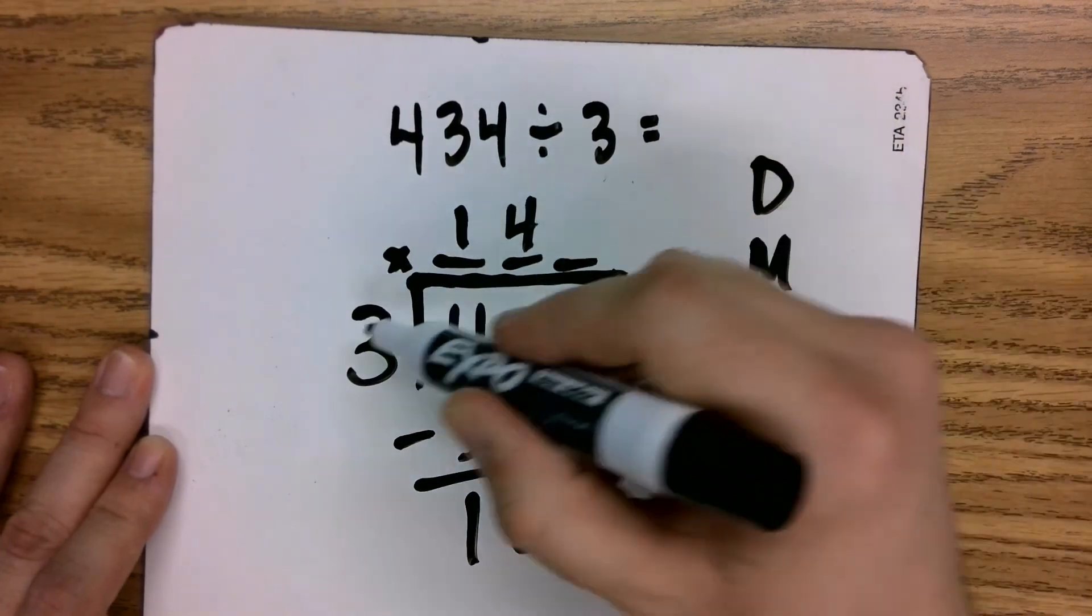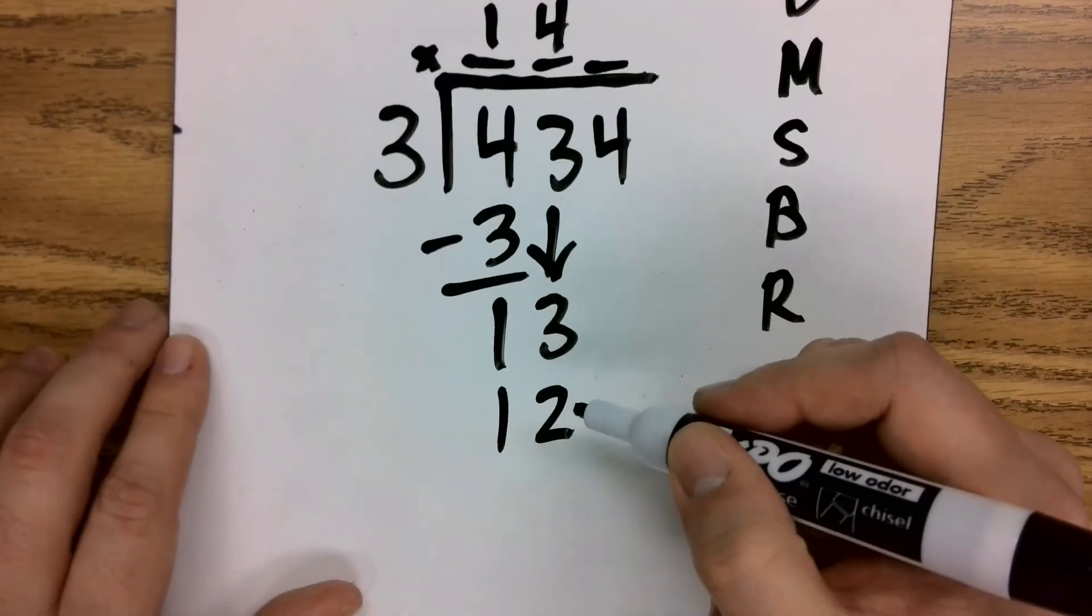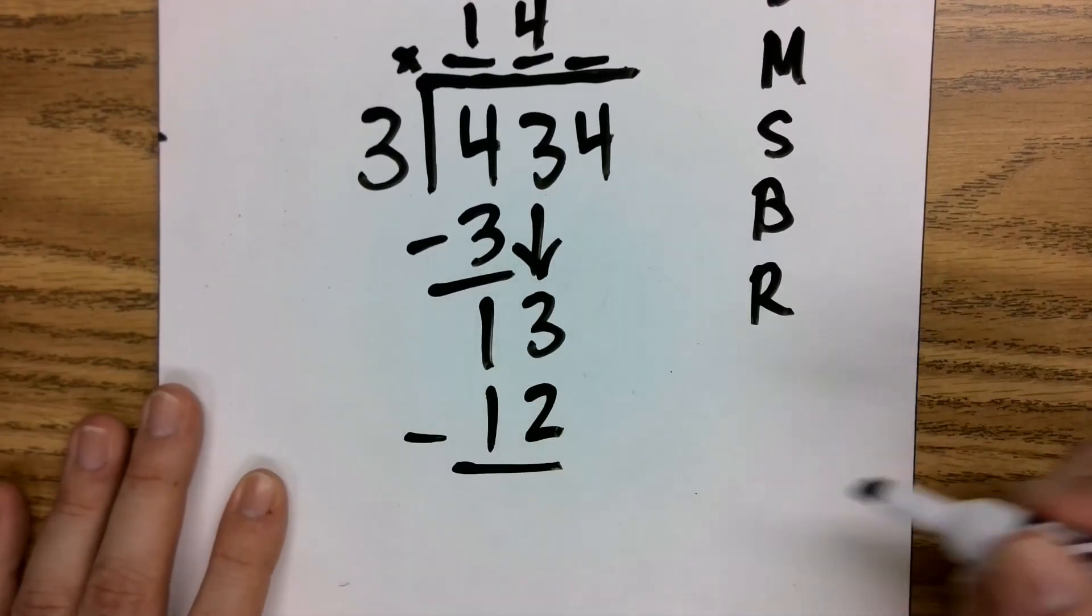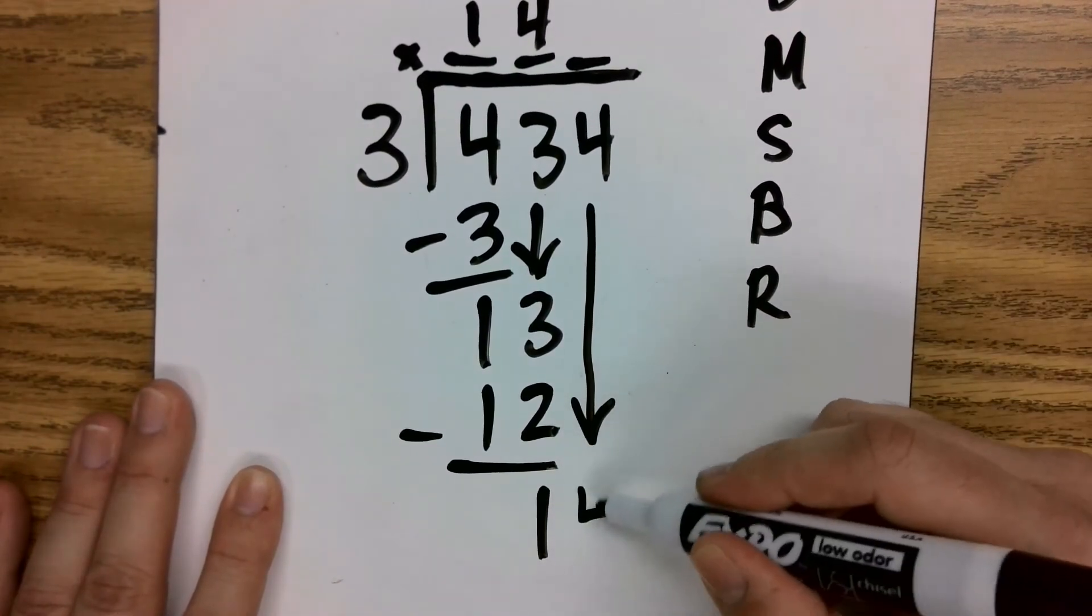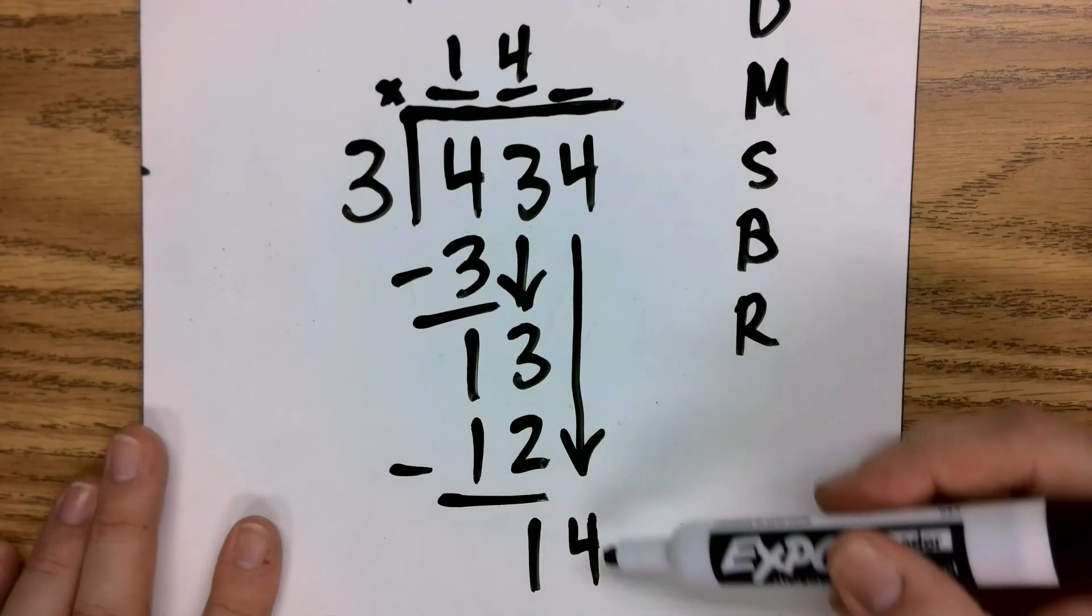It goes in four times. 4 times 3 is 12. When I subtract these, I get 1. Once again, I will bring down the 4. How many times does 3 go into 14?